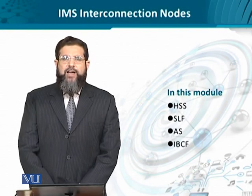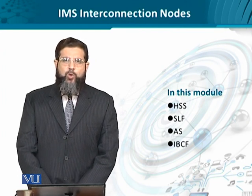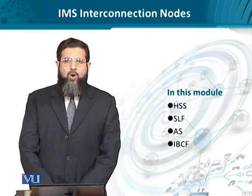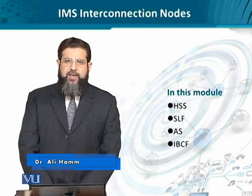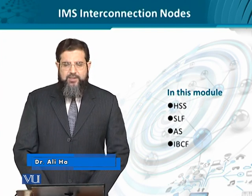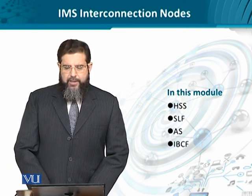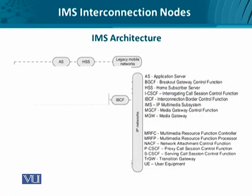Similar to the additional functional elements in IMS, there are certain interconnection nodes which sit at the periphery of the overall IMS architecture and have really important functionalities to be performed. These include HSS, Service Location Function, AS, and Interconnection Border Control Function. For visual clarity, I have omitted the inner details of the IMS architecture. Instead, the interconnection nodes at the periphery of the architecture are being shown to you.